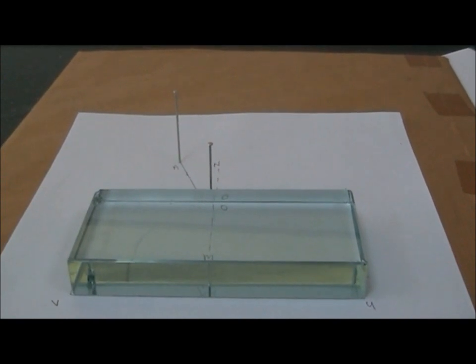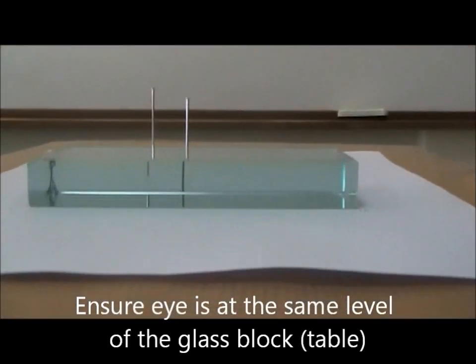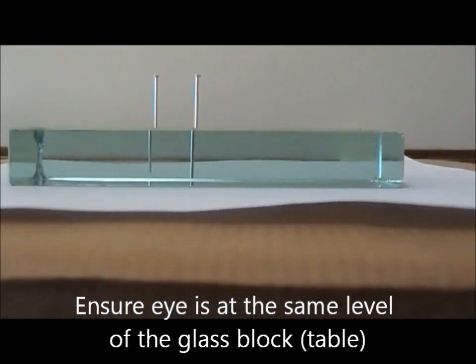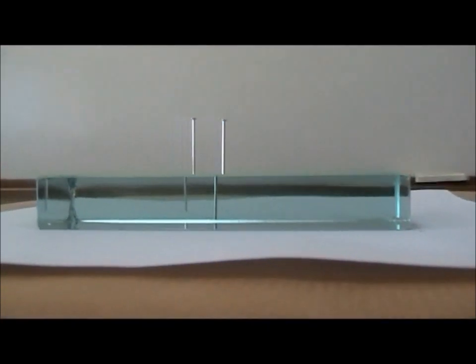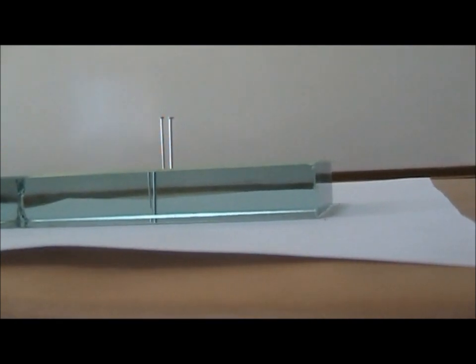When drawing the line of reflection, ensure that your eye is at the level of the glass block. You will realize that there are two images. Align your eye such that only one image is formed.